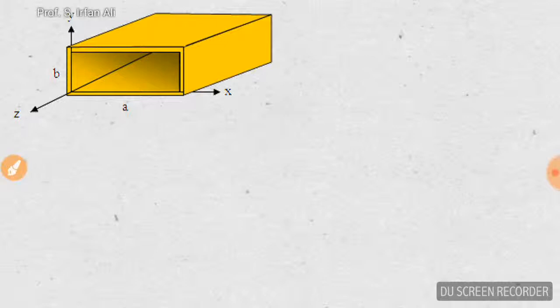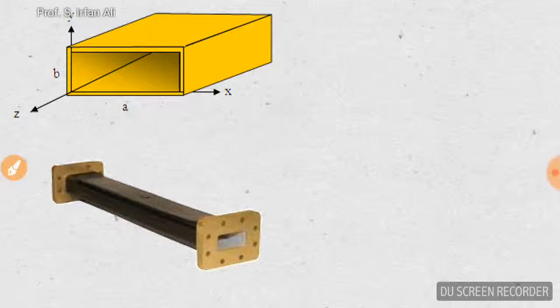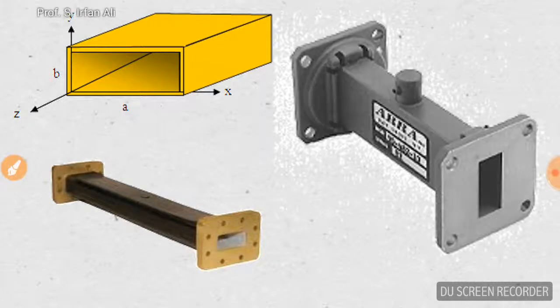I will show you another figure showing practical applications. This is a practical waveguide used to guide electromagnetic waves in a particular direction. This is a straight waveguide which may be interconnected to multiple waveguides. There is another example shown vertically, so it can be used as per need.